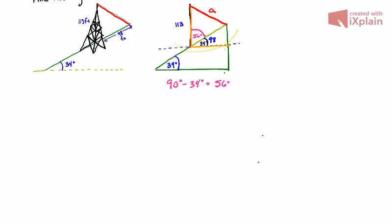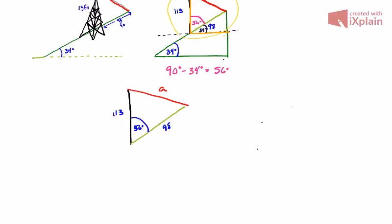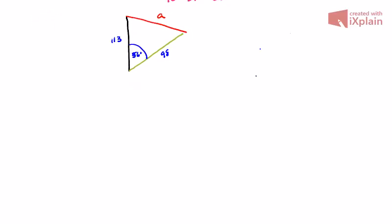I'm going to zoom in and just look at this triangle, the top one. Here's my tower, here's part of the hill, and here is my wire. This side is 113, I know this angle is 56, I know that this portion of the hill is 98, and I'm trying to find this piece.